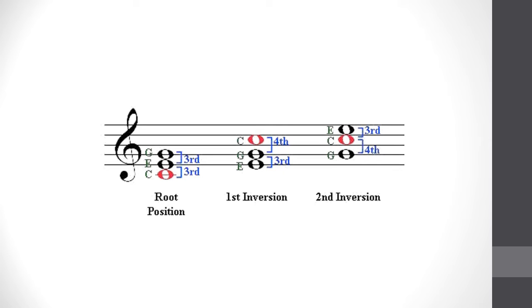When the C major chord is in first inversion, the root C is the upper pitch in the interval of a fourth. When the C major chord is in second inversion, the root C is also the upper pitch in the interval of a fourth.